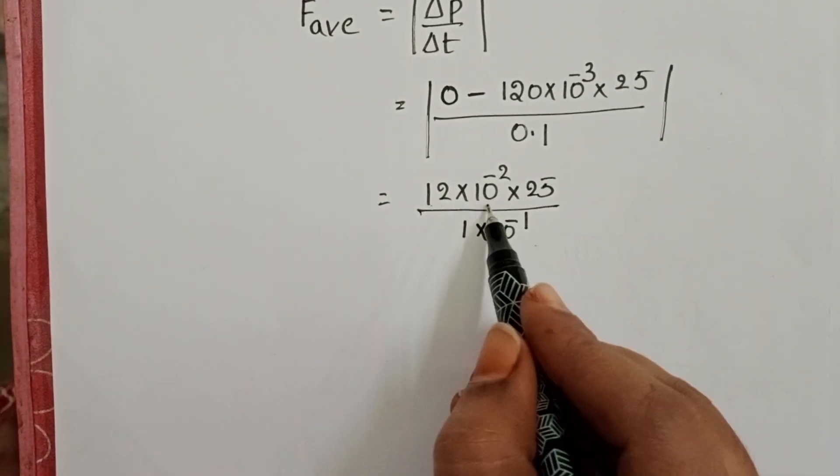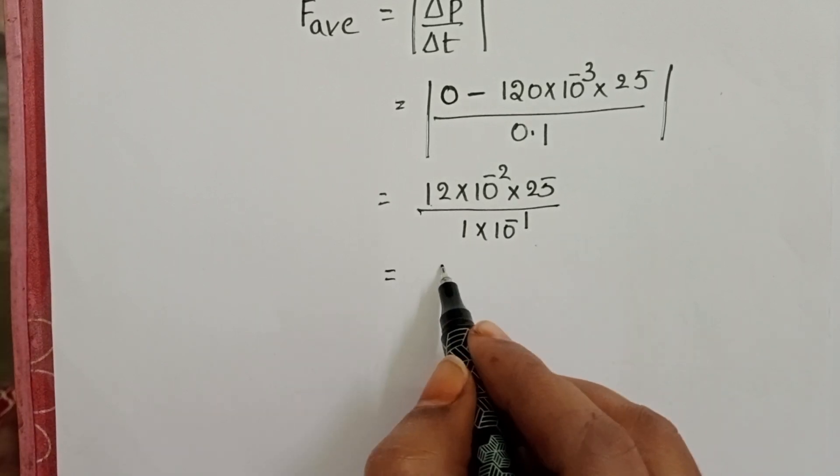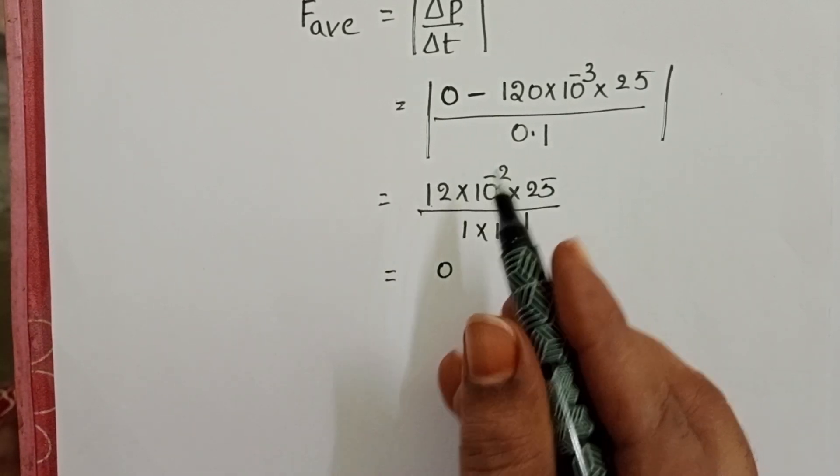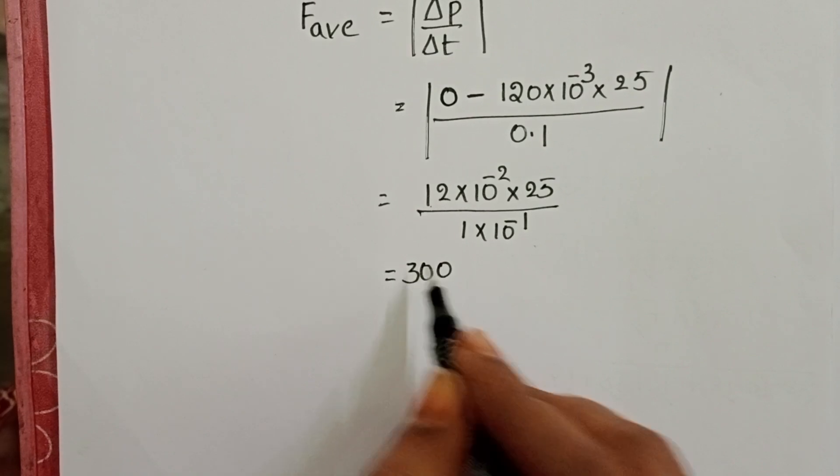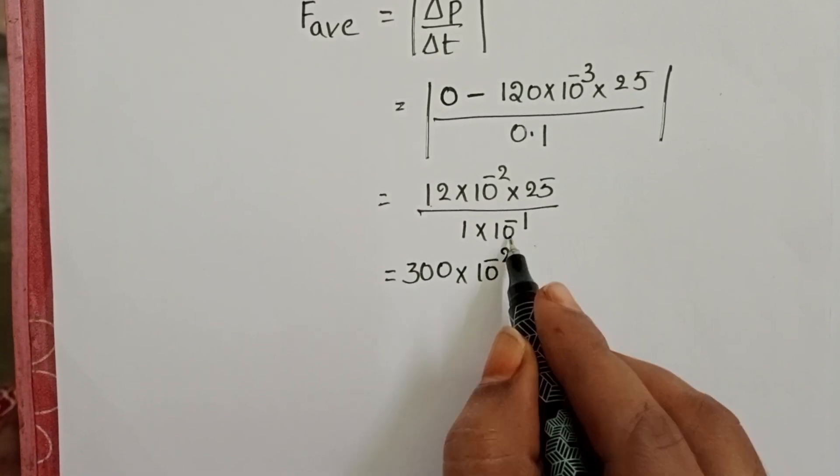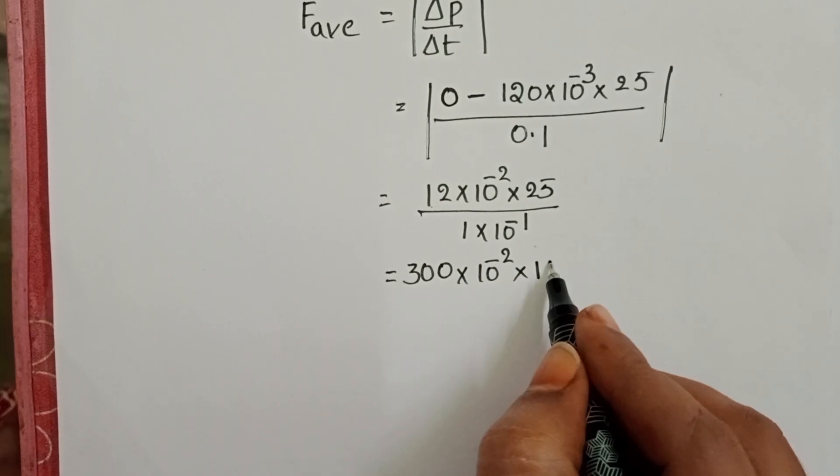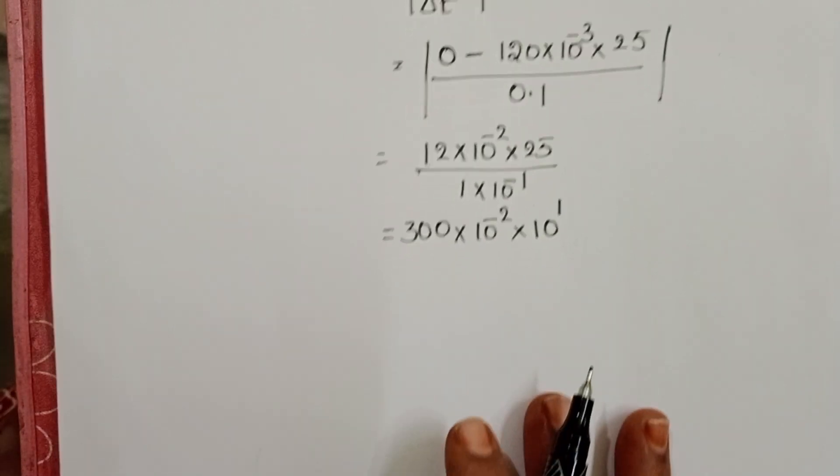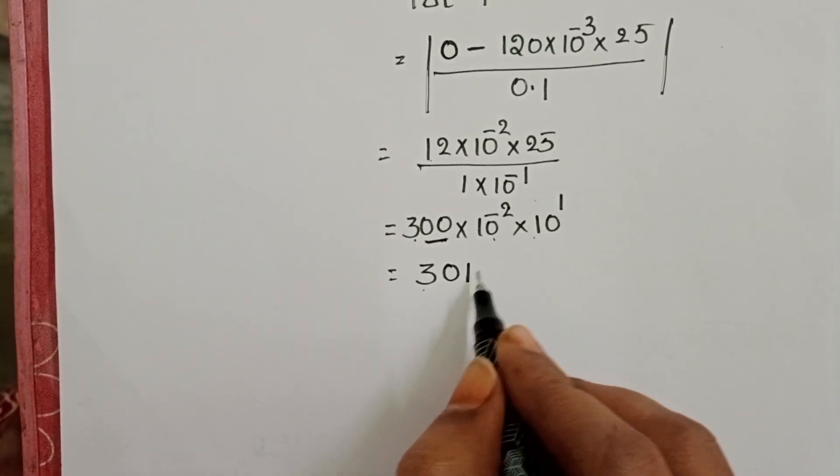Now, multiply 12 with 25. 25, 2 is 50. 25, 1 is 25. 25 plus 5 becomes 30. 300 into 10 power minus 2 into this 10 power minus 1 goes to numerator. It becomes 10 power plus 1. 30 newtons.